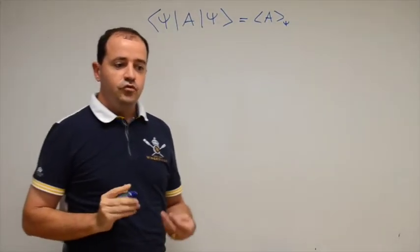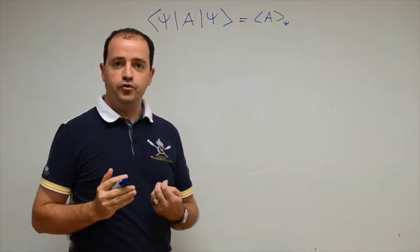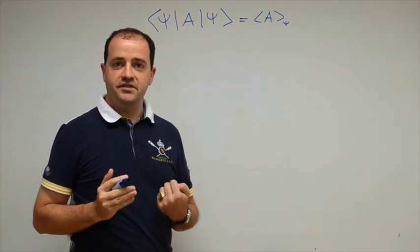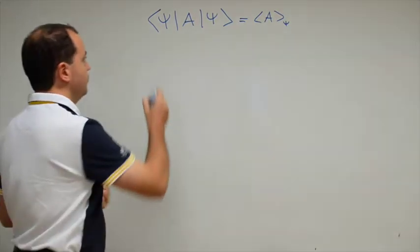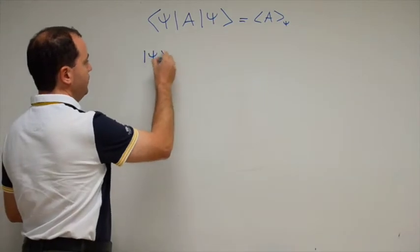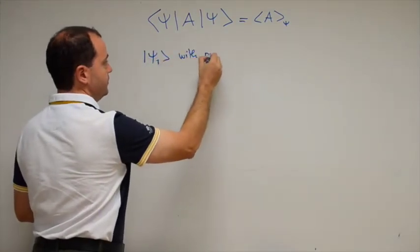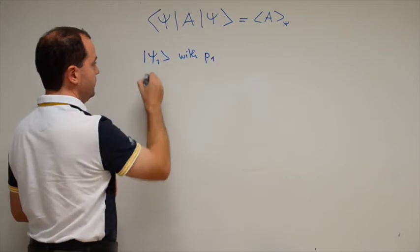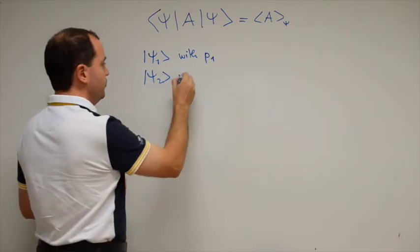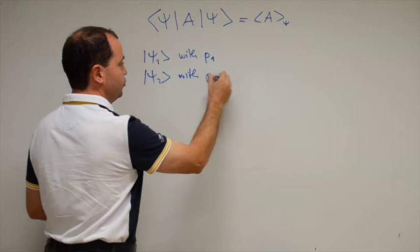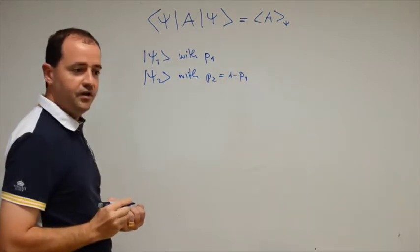Now we can consider the situation where the source is producing sometimes a state Psi1, sometimes a state Psi2. So the source produces Psi1 with a frequency or probability P1, and Psi2 with probability P2, which is of course 1 minus P1.